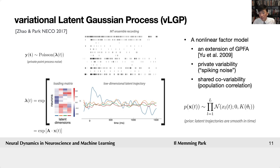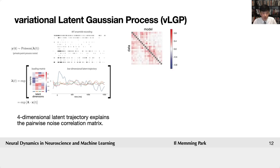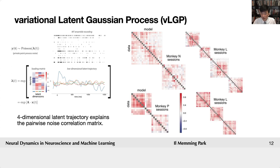The first thing we want to verify is that VLGP captures all the noise correlation we expect to see. We have frozen trials in the task, so we can compute noise correlation between neurons. The lower portion of this matrix shows pairwise correlations during frozen trials, and the upper half shows model-predicted noise correlation — they match pretty closely. This holds across bigger sessions from multiple monkeys.